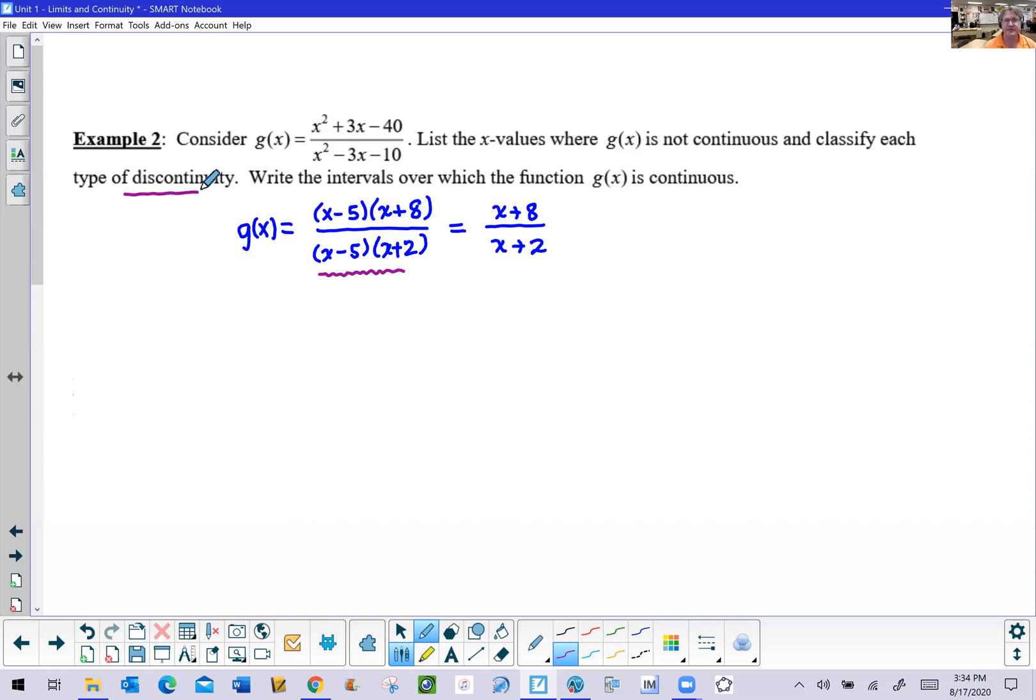And so we have two different versions. We have the removable, we have the non-removable. Anytime a denominator cancels, I want you to think of that as having been removed. Cancel means removed. Pretty easy to think of it that way. So you can say that there is a removable discontinuity at x equals 5.